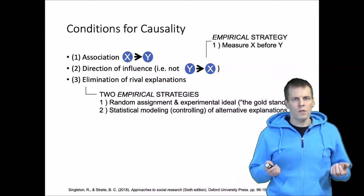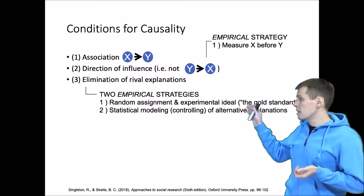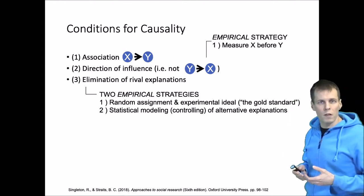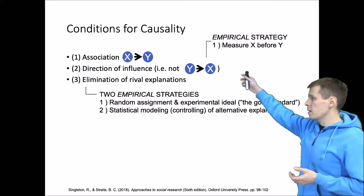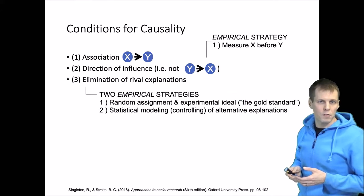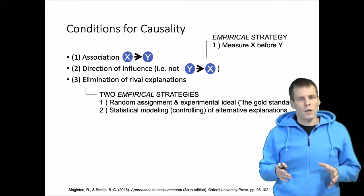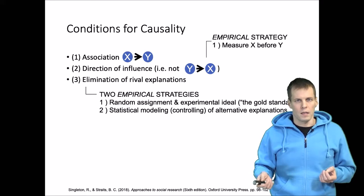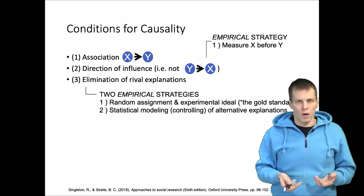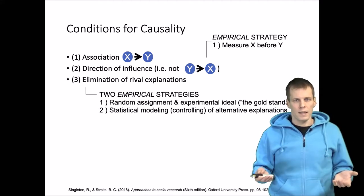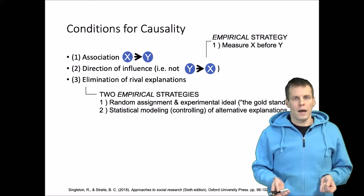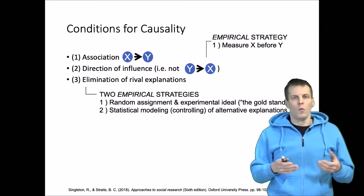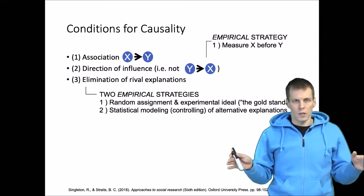In a research methods course or a book about research methods you may have seen this kind of explanation for making causal claims. We are supposed to demonstrate three different conditions: association, direction of influence, and elimination of rival explanations. The best way to demonstrate direction of influence empirically is to measure the cause before the effect, and there are two main ways of eliminating rival explanations: the randomized experiment, where people are assigned randomly to treatment and control groups and we compare outcomes afterward.